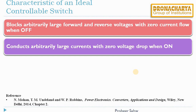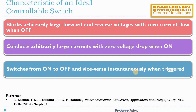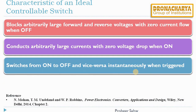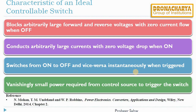When the switch is conducting, there should be no voltage drop across it. If the switch is turned on from the off position or vice versa, this state change is called triggering. For an ideal controllable switch, this triggering should be instantaneous, and it should draw very small amount of power from the control source. These are the characteristics of an ideal switch.